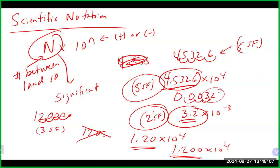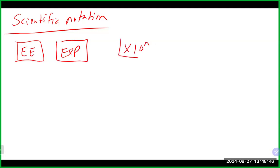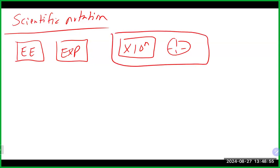More importantly, what most people don't know how to do correctly is punch scientific notation into a calculator. You want to make sure you know how to punch it in correctly. On your calculator, we have an EE button, an EXP button, or on some newer ones a 10 to the N button. These are the exponent buttons you should be using when you enter a number in scientific notation.